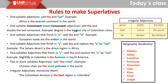Now we are going to continue with rules to make superlatives. This is pretty similar — it depends on the amount of syllables in the word. Rule one, one-syllable adjectives: add 'the' and the particle '-est'. Example: Africa is the poorest continent in the world. Rule two, one-syllable adjectives finishing in consonant-vowel-consonant: add 'the' and double the last consonant. Example: Bogota is the biggest city of Colombian cities. Rule three, one-syllable adjectives finishing in -e: add 'the' and the particle '-st'. Example: European roads are the widest in the world.